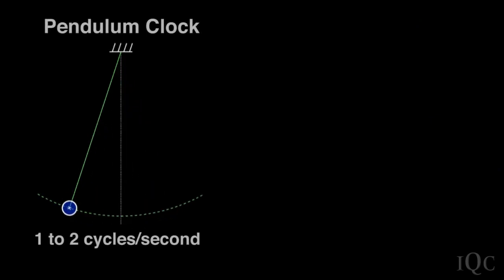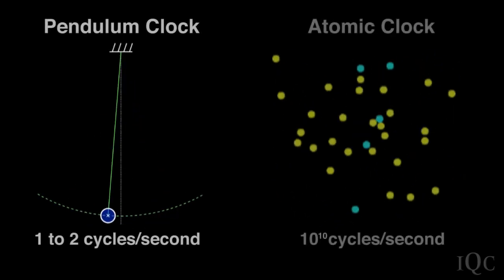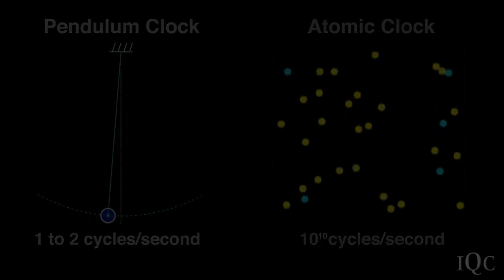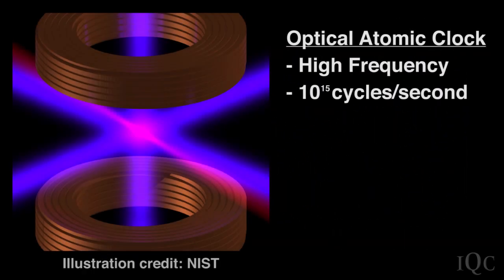The only technical difference is that, as opposed to a pendulum clock that's oscillating maybe once every other second or so, we're talking about oscillation frequencies of about 10 to the 10th cycles per second. And now we can make much more accurate clocks if we go to high frequencies, so now about 10 to the 15th cycles per second.